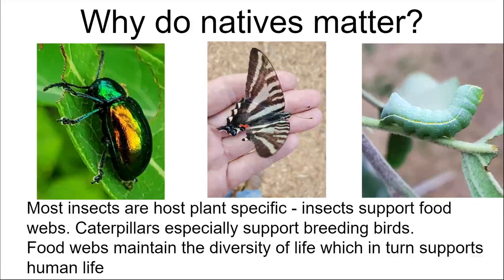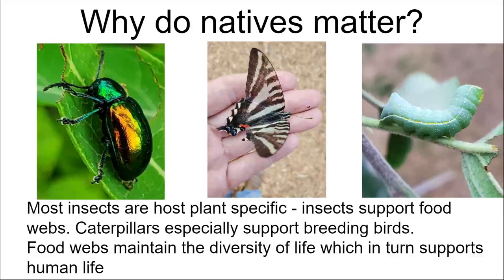On the right is a caterpillar — a bit more of a generalist — eating my apple tree. A lot of us would want to get the pesticides out, but if you spray, you'll kill pretty much all insects, including beneficial ones that eat caterpillars, and potentially poison birds depending on what you spray. So instead, I let the birds come in and eat my caterpillars. Usually that works pretty well.